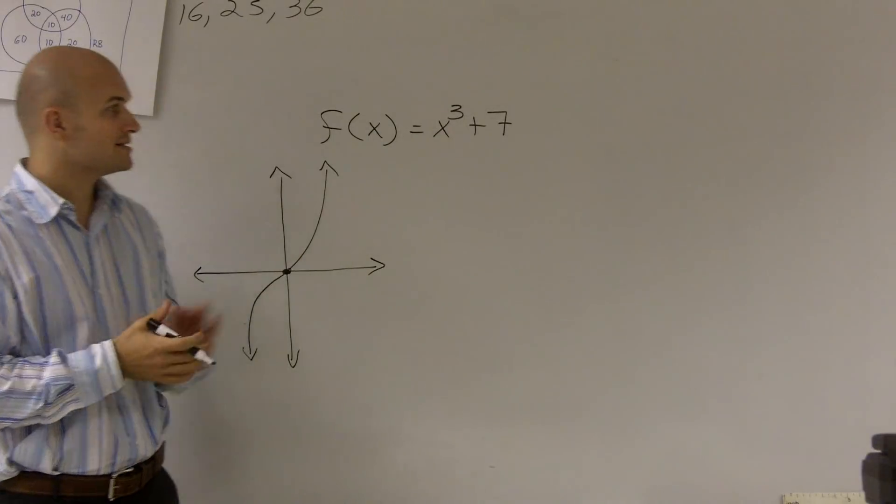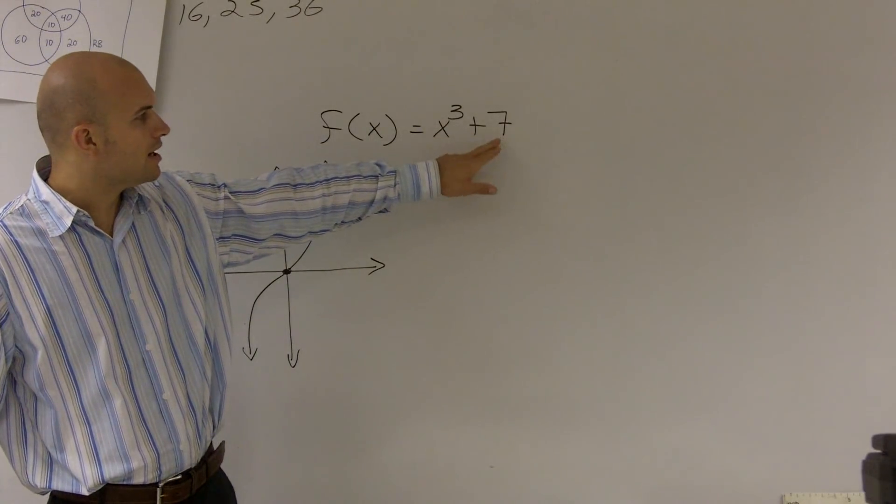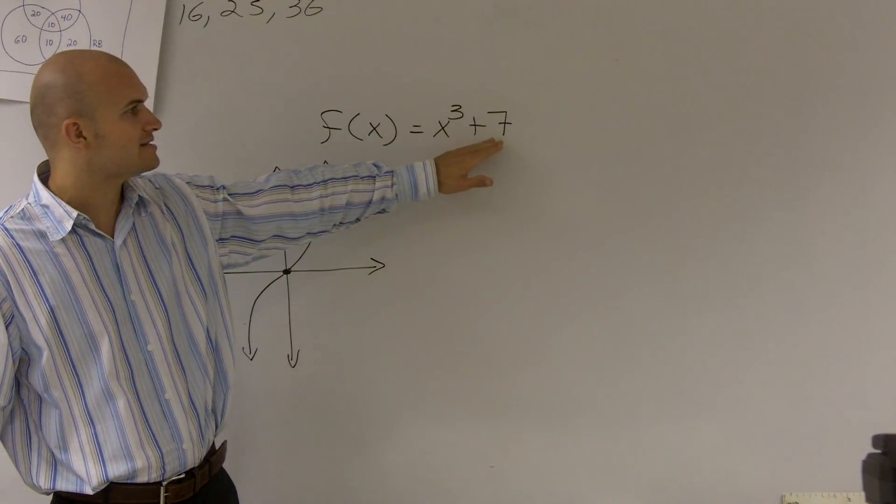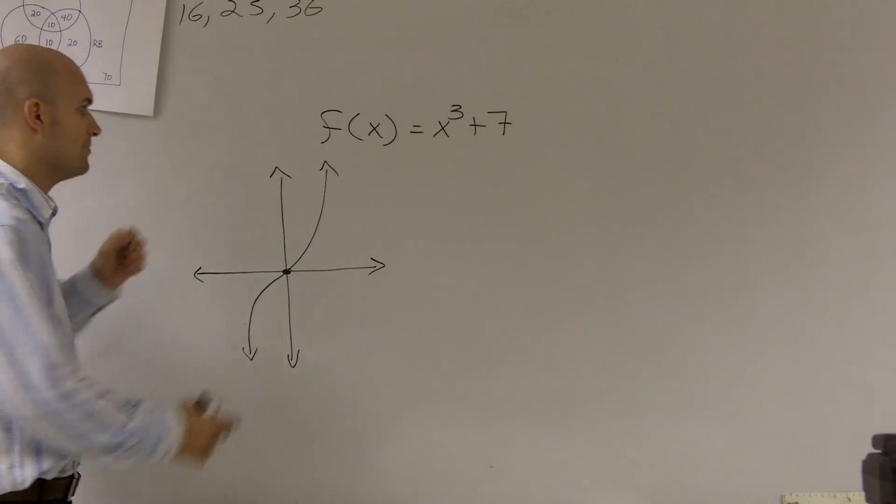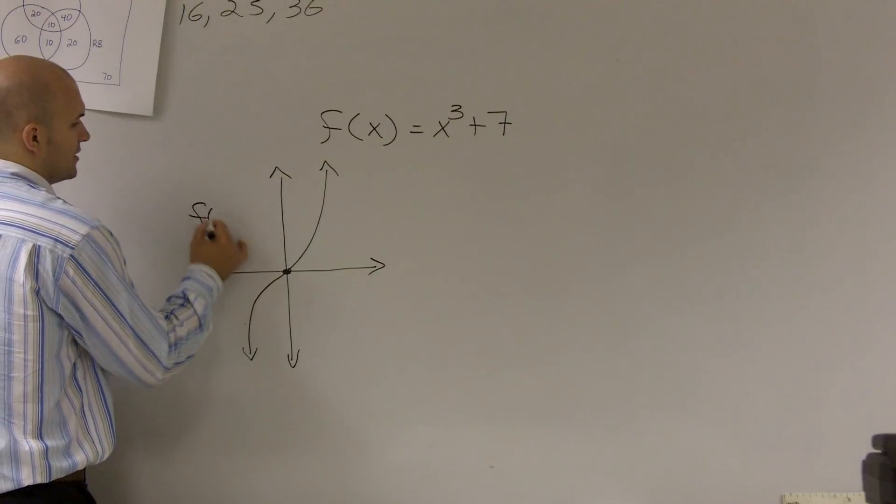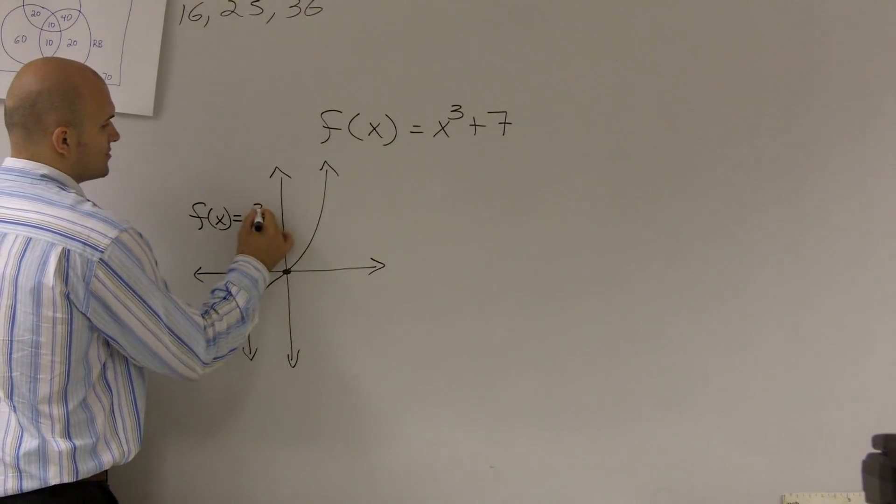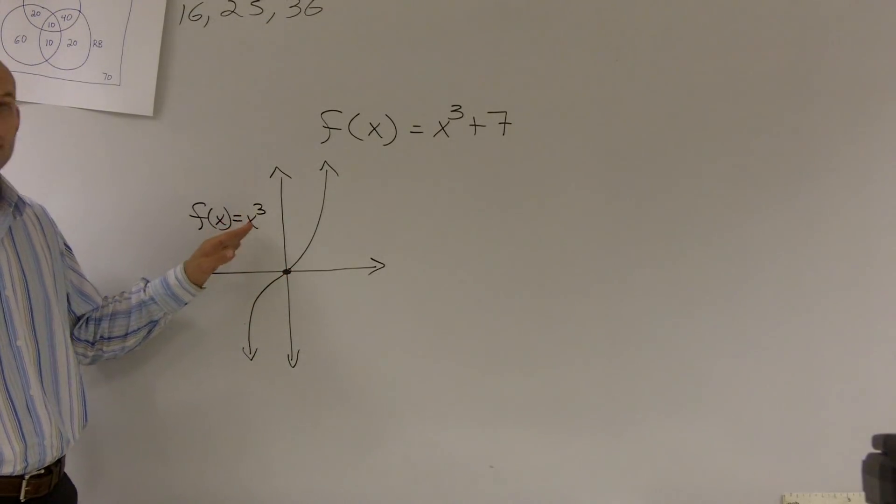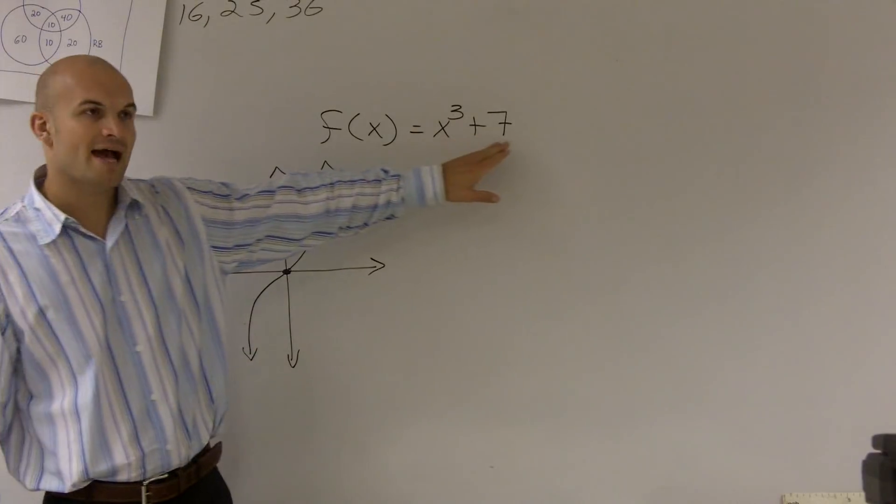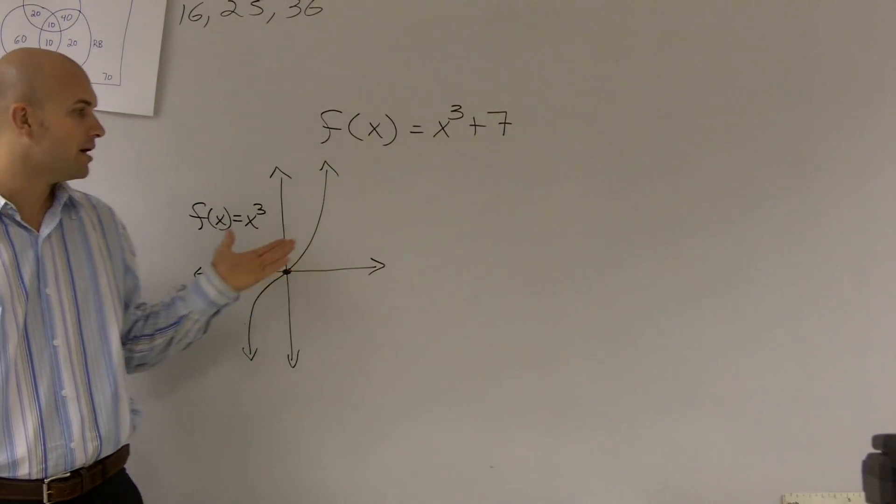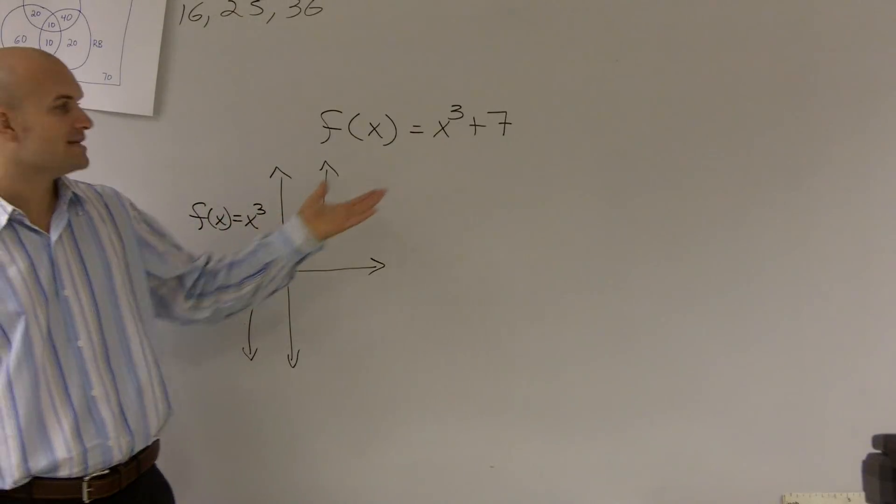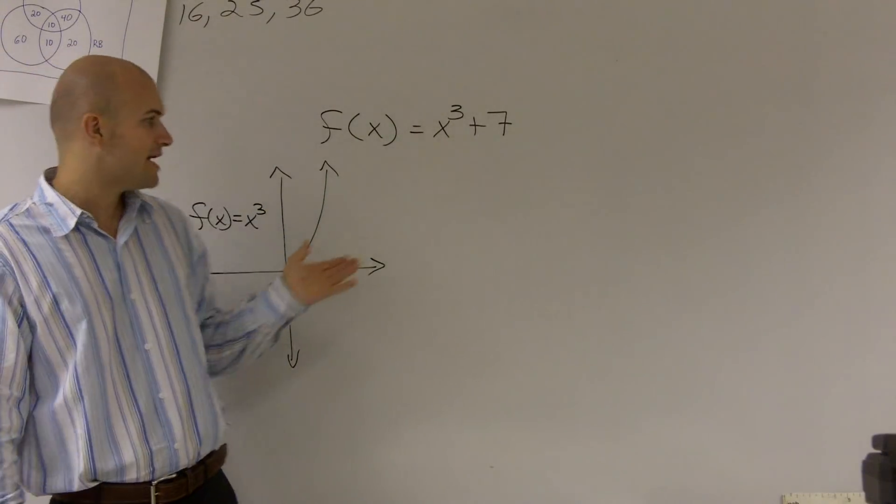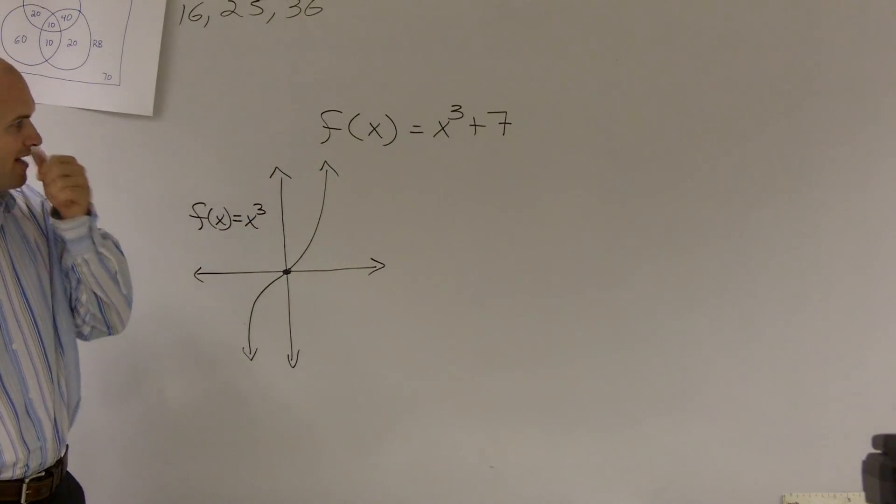Now the important thing I was trying to stress to you guys is when we're looking at this, now we're adding a 7 outside of our original function because this function is f of x equals x cubed. So when there's no transformations, that's what the graph looks like. But now what I've done is I've added a 7 to our function. So therefore, that is now going to be affecting our y coordinates of every point that makes up that graph.